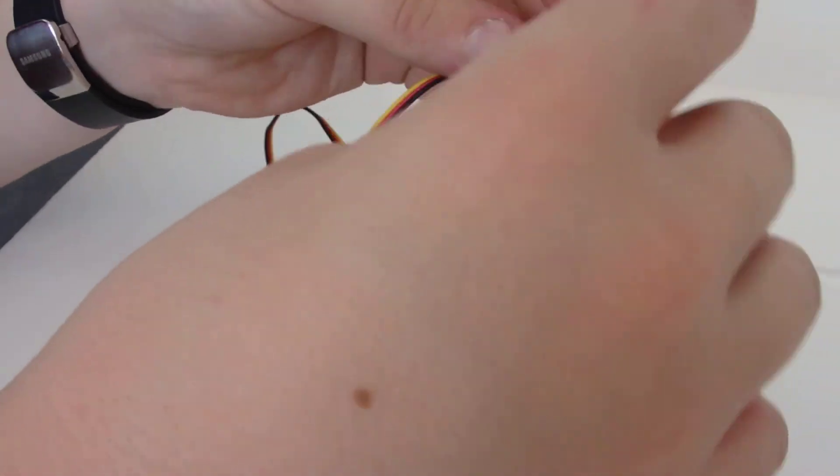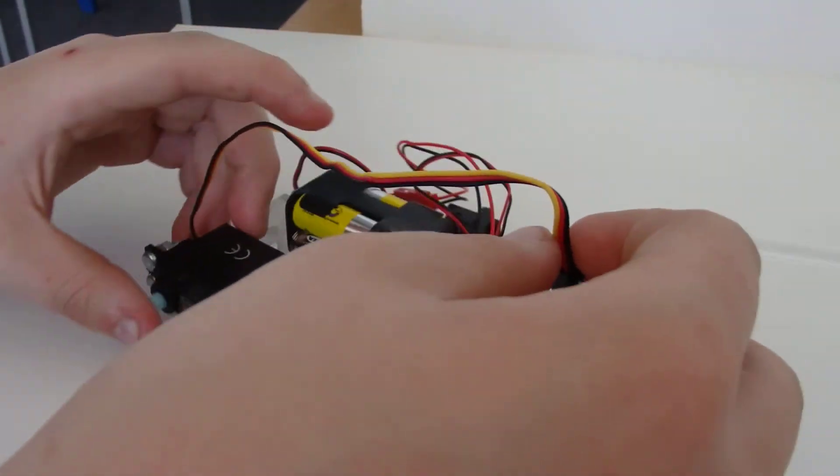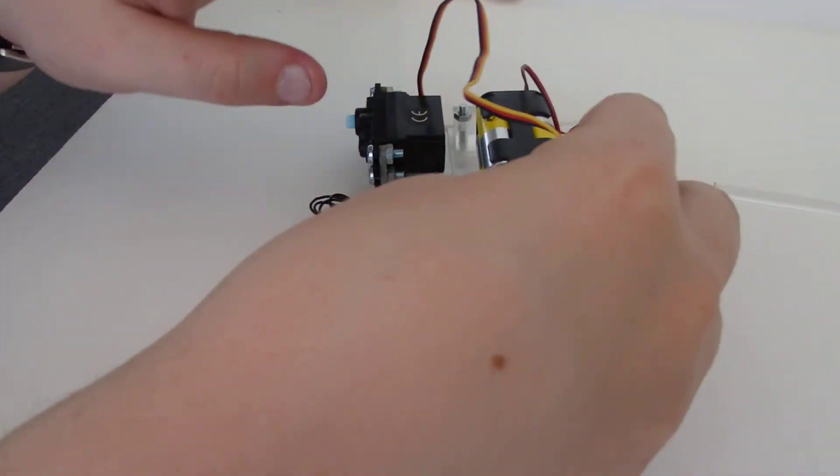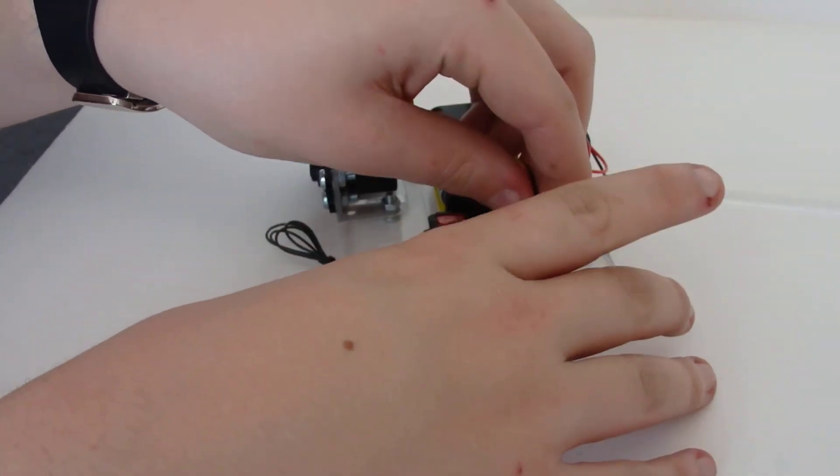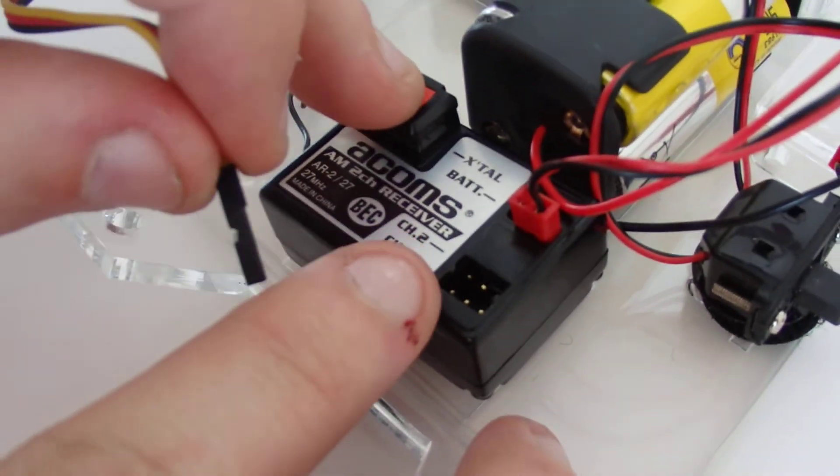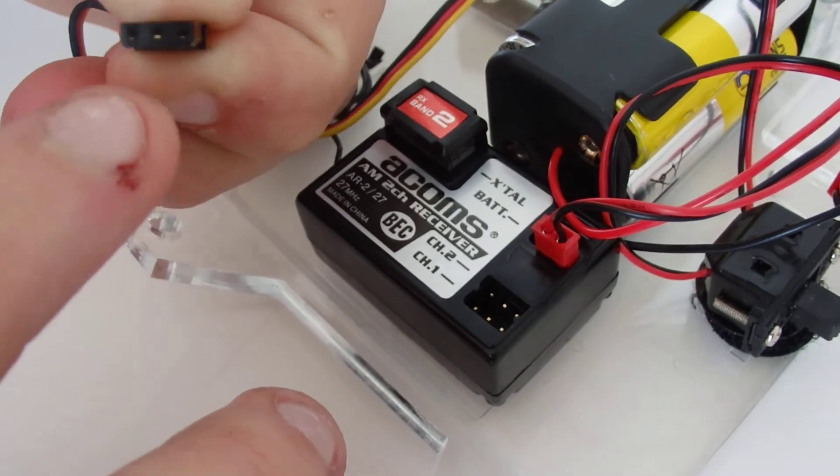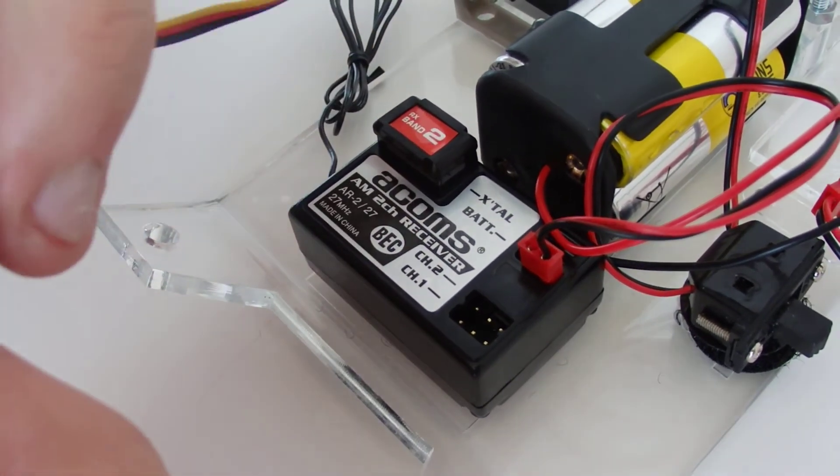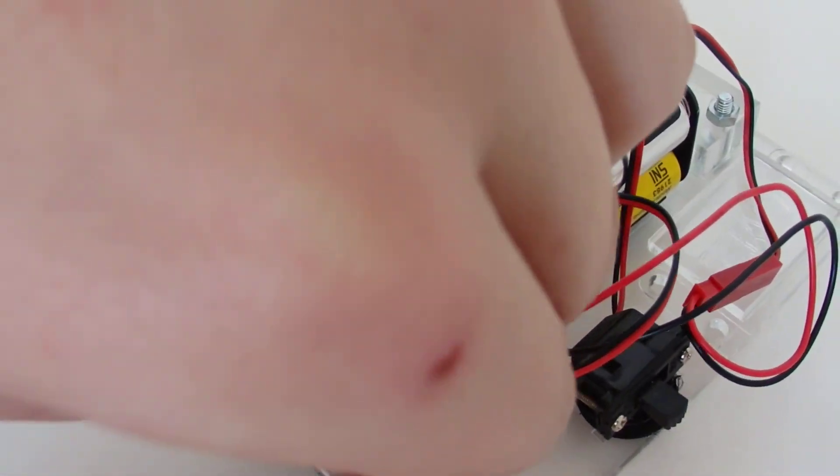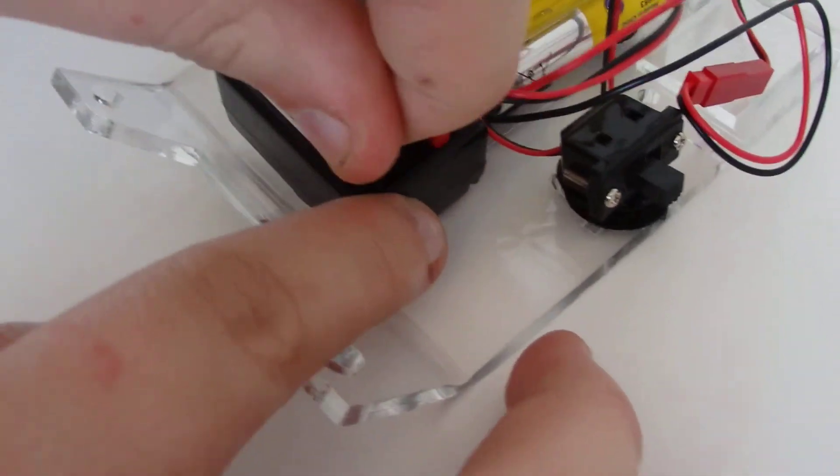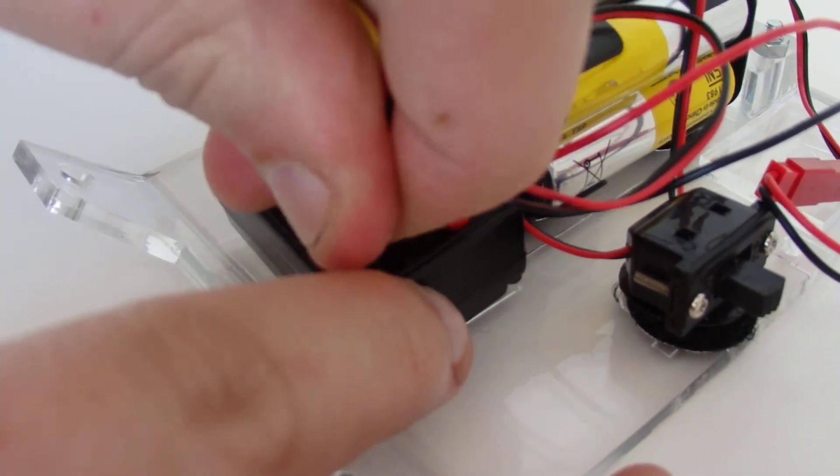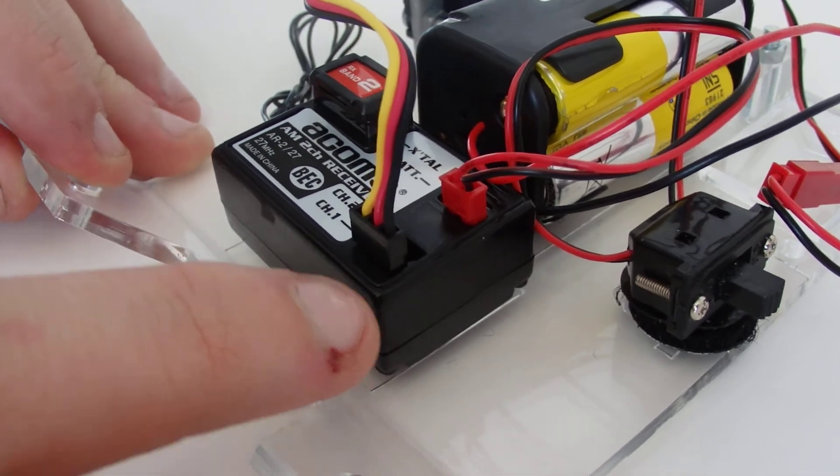Now I am going to connect the servo to the receiver. Make sure that the right hand side servo goes into channel 1. As you can see it has got a cut out here, cut out on there, so that this can only go in one way. It goes in that way, so the black wire is facing outwards.